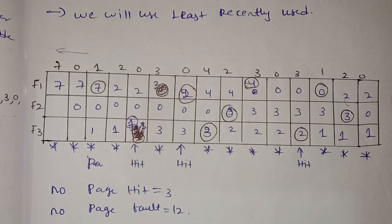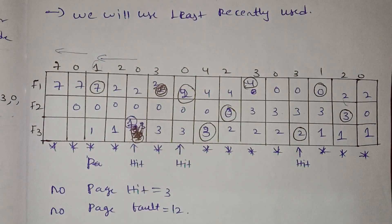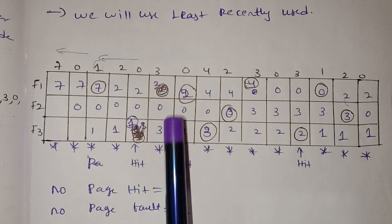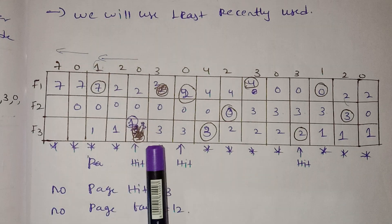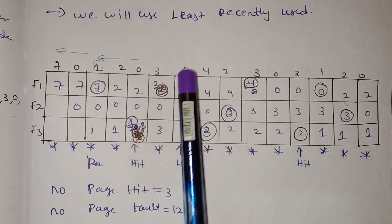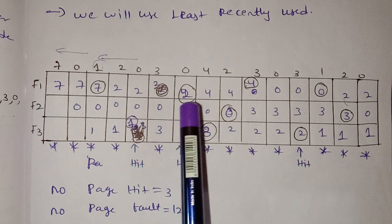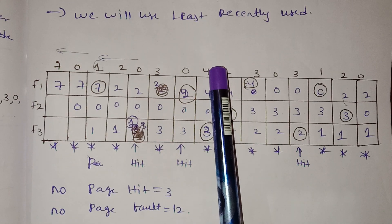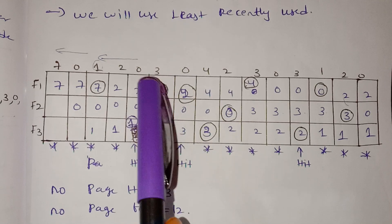Next, we have 3 to replace. We find the least recently used page and remove it. Then 0 comes — 0 is already in frames, so it is a hit. Next, 4 comes — we replace the least recently used page, which is 0, 3, or 0 based on usage order.